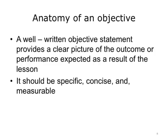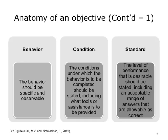A well-written objective statement provides a clear picture of the outcome or performance expected as a result of the lesson. It should be specific, concise, and measurable. An objective statement has three parts: the behavior, the condition, and the standard. The behavior describes what the students will be able to do, and verbs that are specific and observable should be used. The condition under which the behavior is to be completed should be stated, including what tools or assistance are provided. The standard indicates the level of performance that is desirable, including an acceptable range of correct answers.